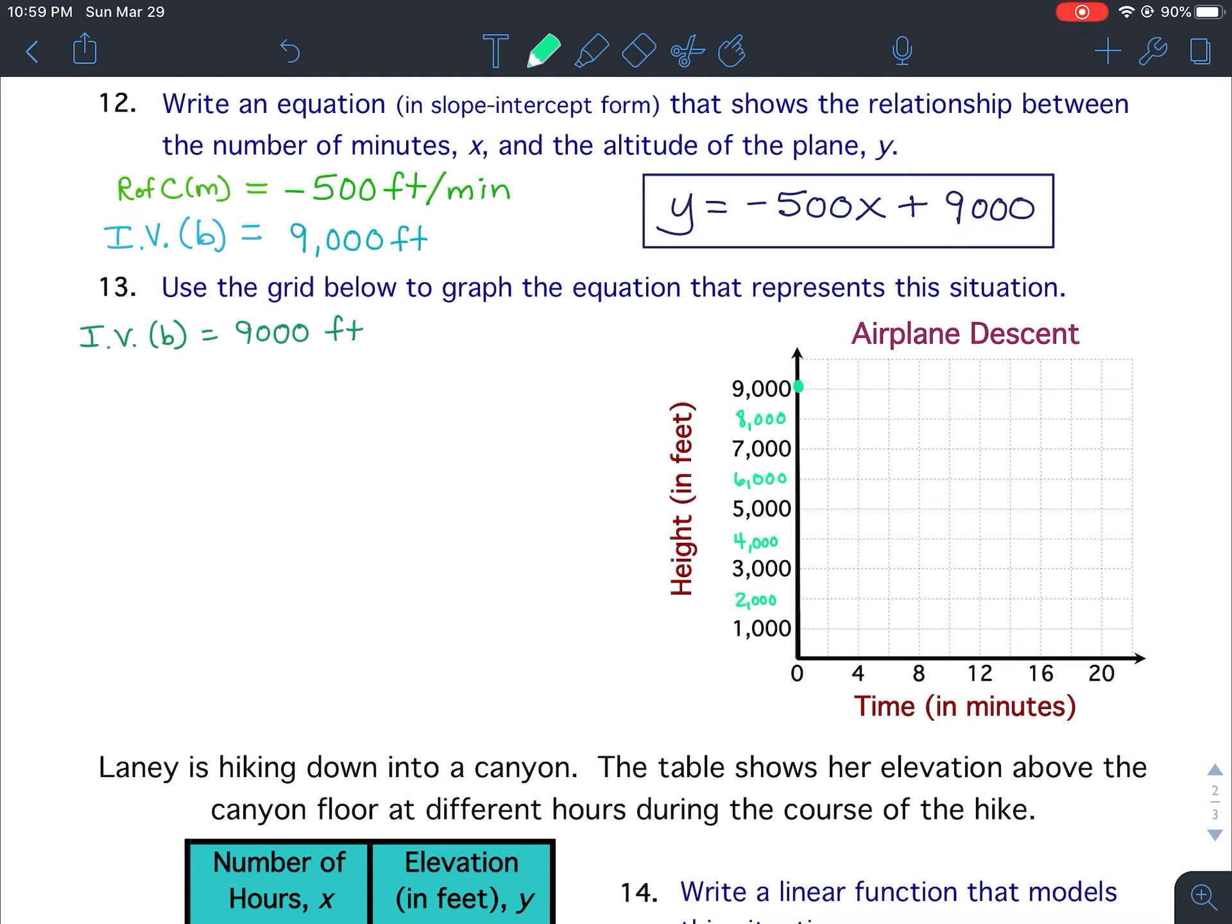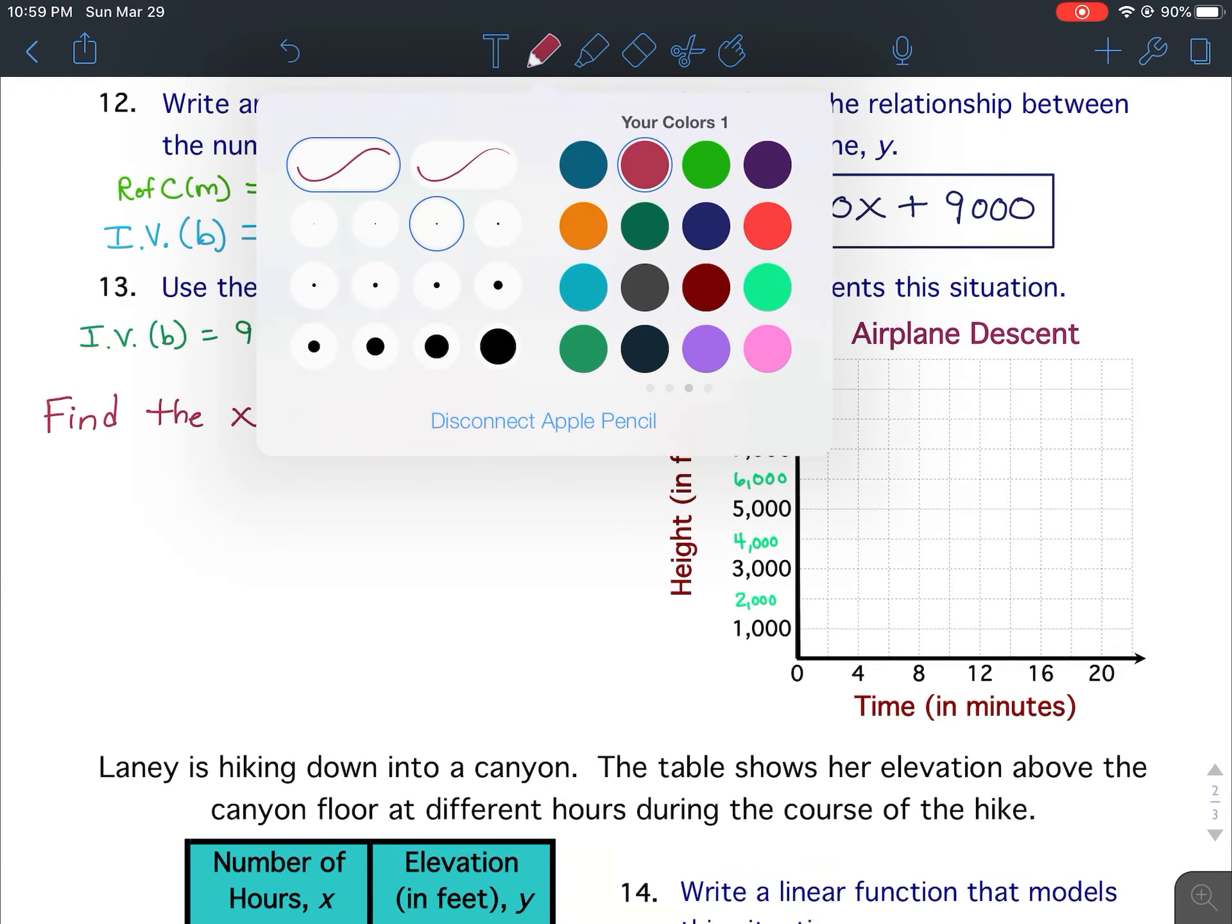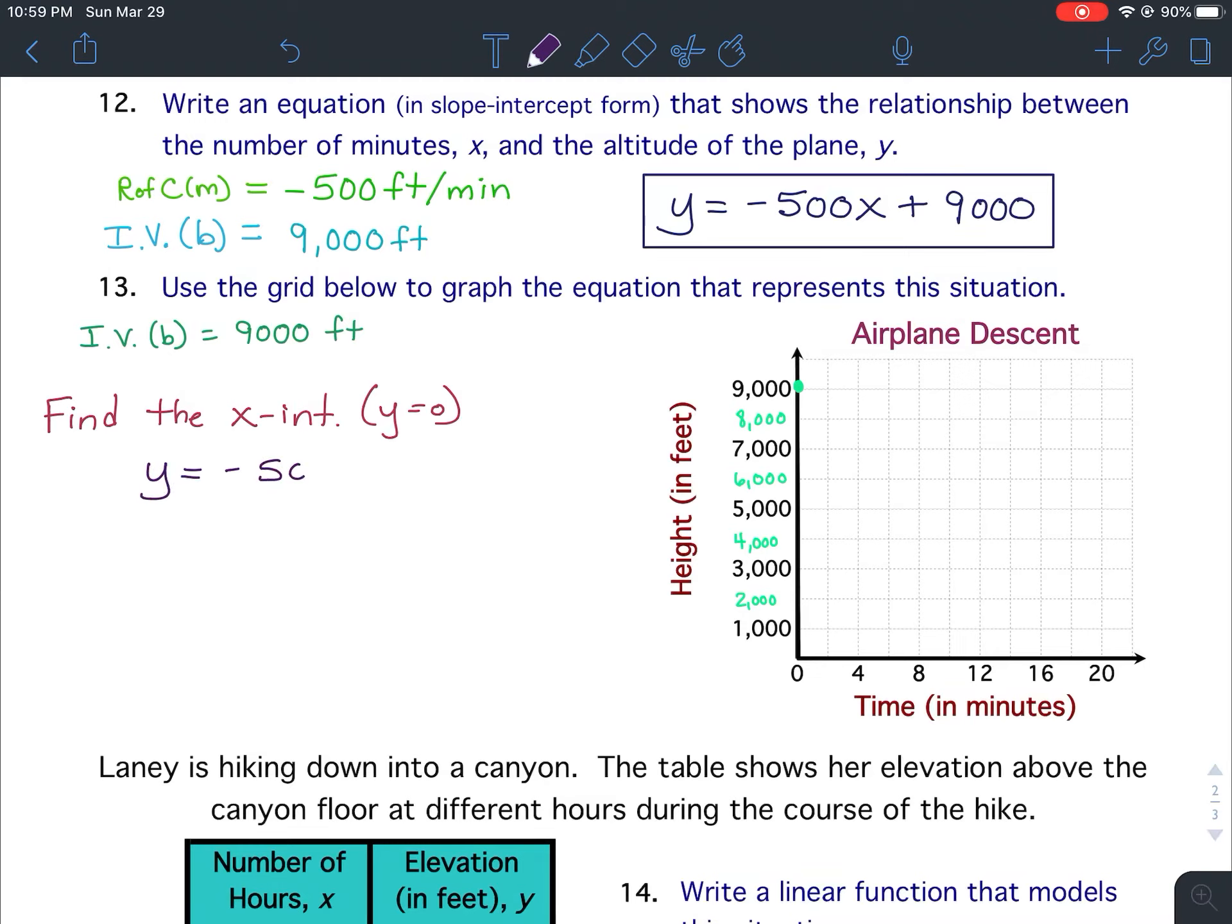So we're going to take this equation that we found up here. We're going to plug 0 in for y and solve for x. So let's go ahead and find the x-intercept, which means y equals 0. So we're going to take our equation and we're going to plug 0 in for y. And now this becomes a two-step equation. Let's box this. Go ahead and take your 9,000 to the other side.